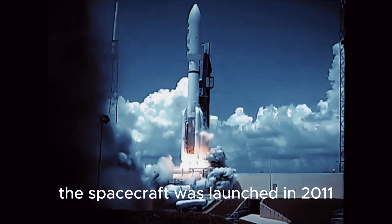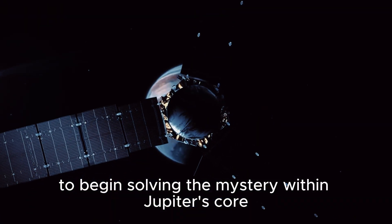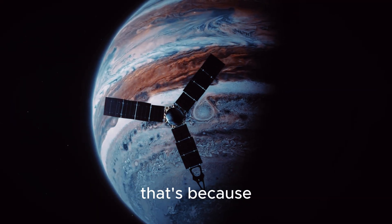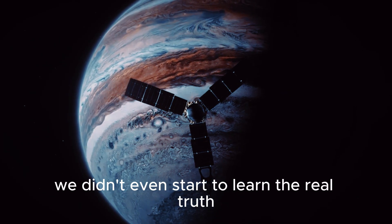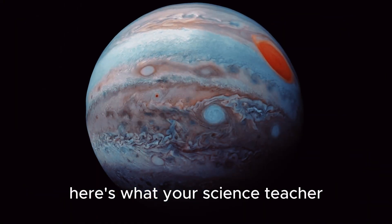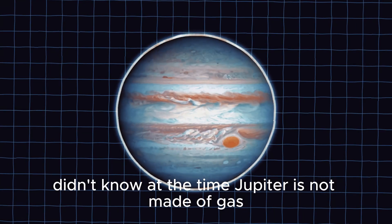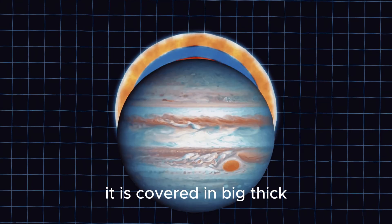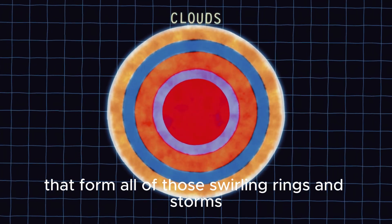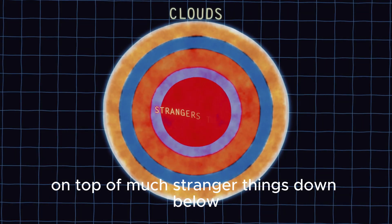The spacecraft was launched in 2011, and it arrived in 2016 to begin solving the mystery within Jupiter's core. So when we say that everything you were taught in school is wrong, that's because we didn't even start to learn the real truth until this past decade. So here's what your science teacher didn't know at the time. Jupiter is not made of gas. It is covered in big, thick clouds of gas that form all of those swirling rings and storms. But those clouds are just a thin layer on top of much stranger things down below.